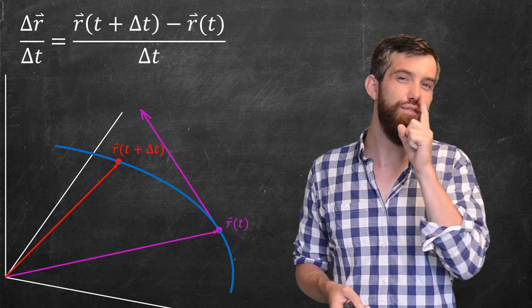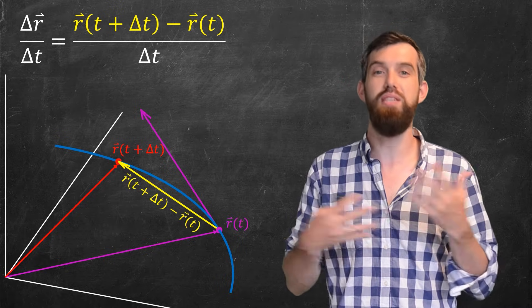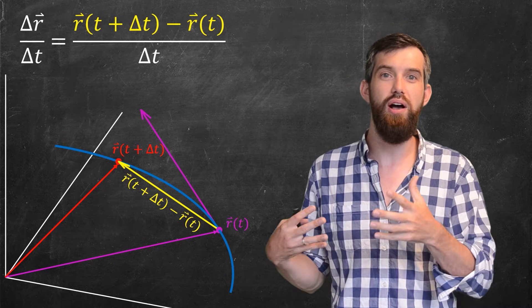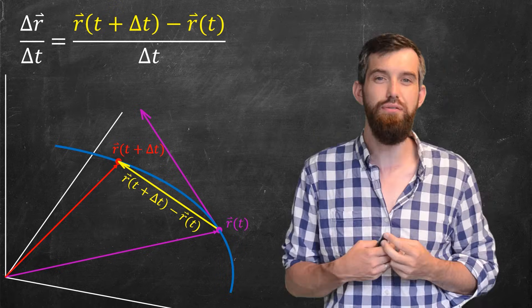Let's consider the vector that goes between these two points. This is the vector r of t plus delta t minus r of t. That is, that's just the numerator of my difference quotient.